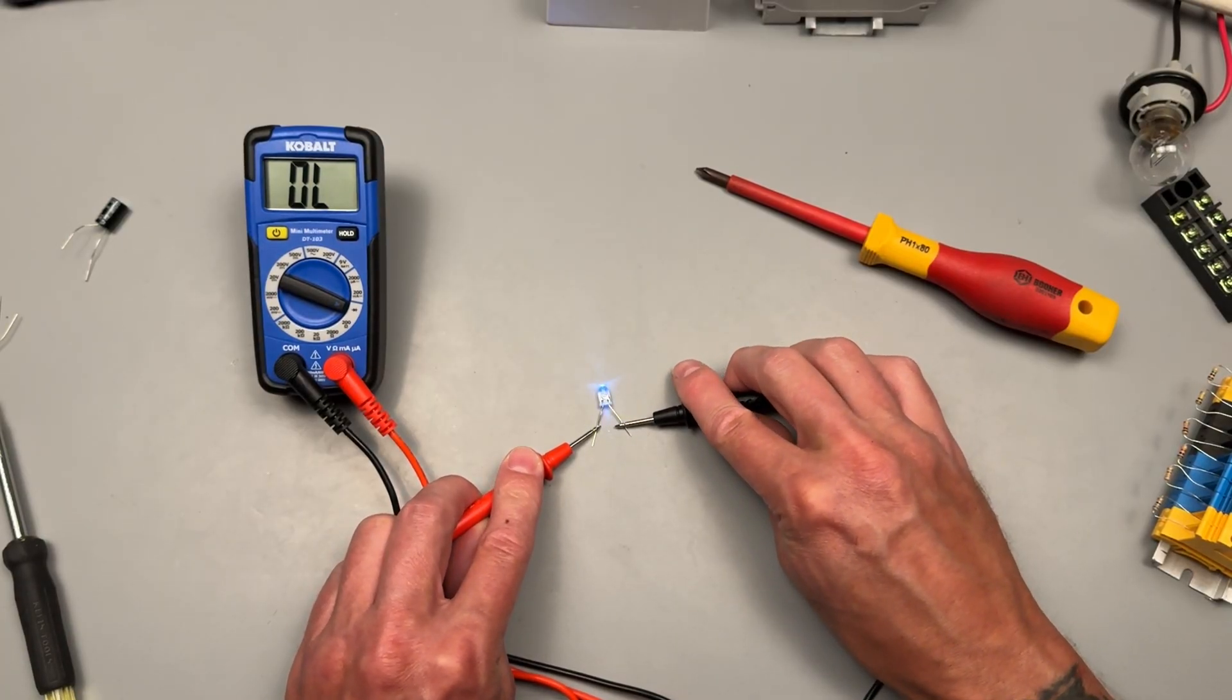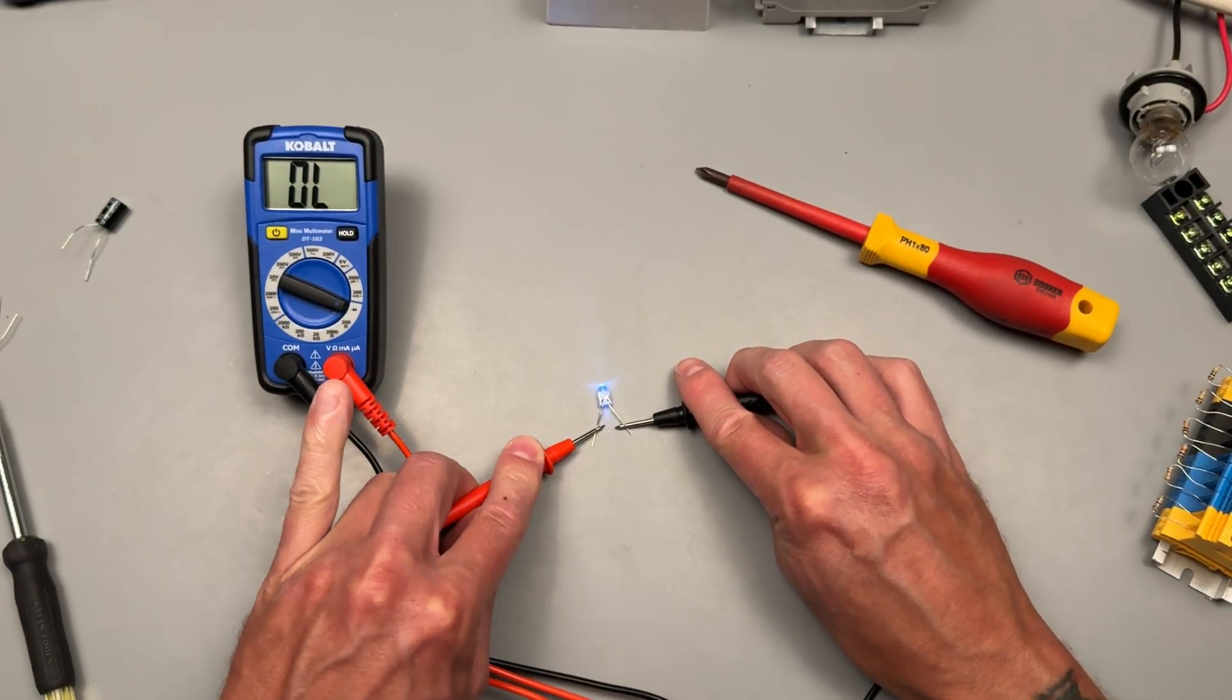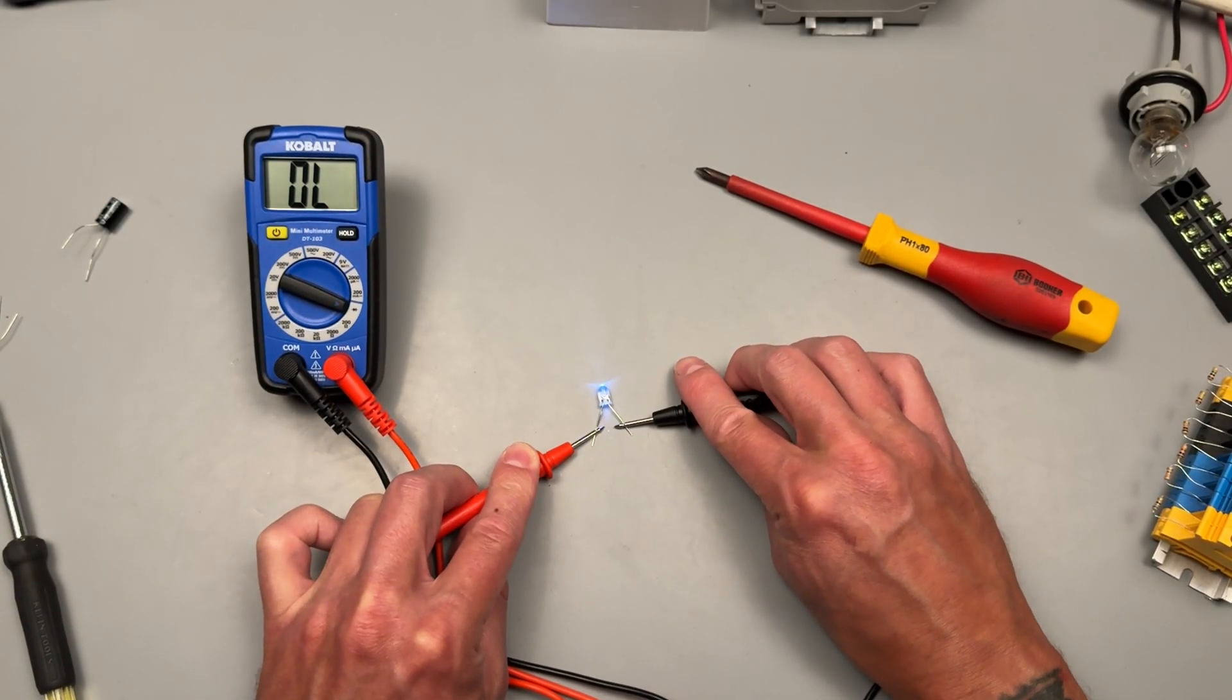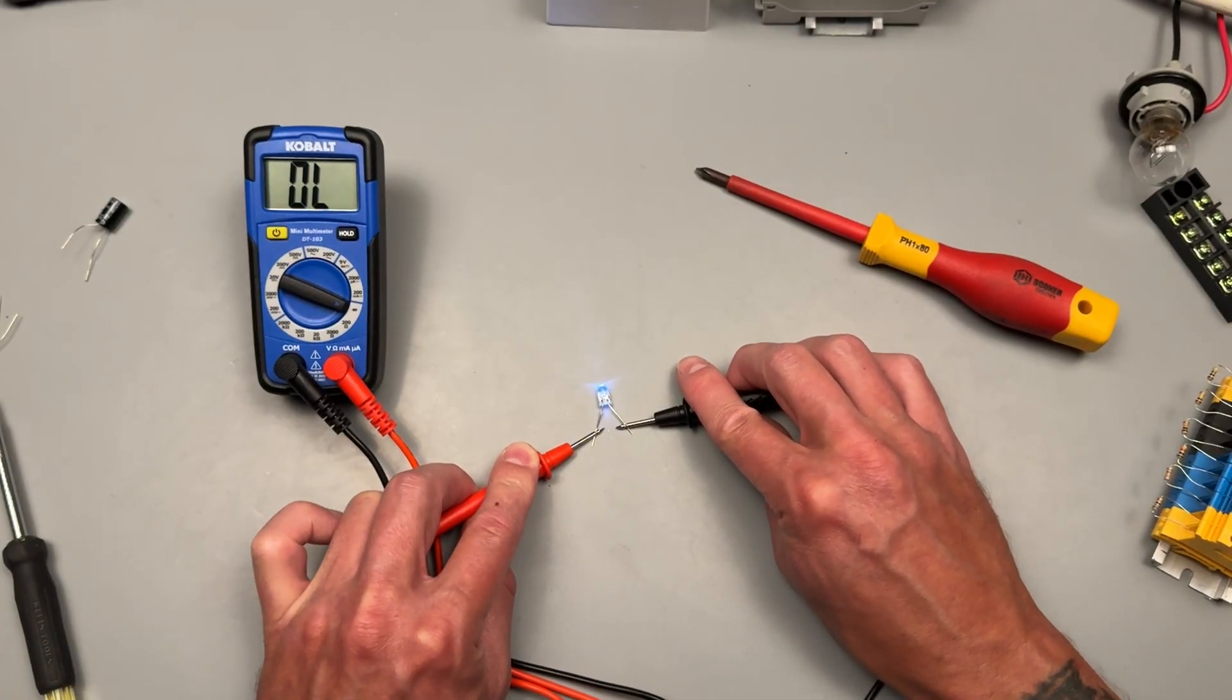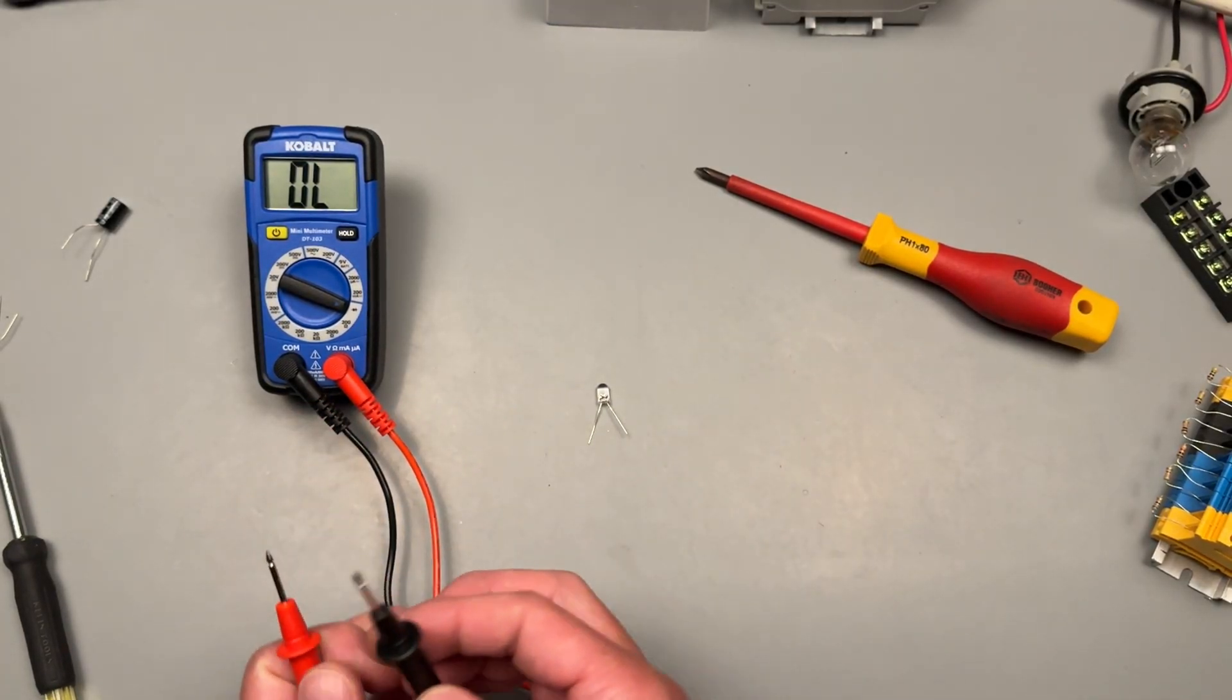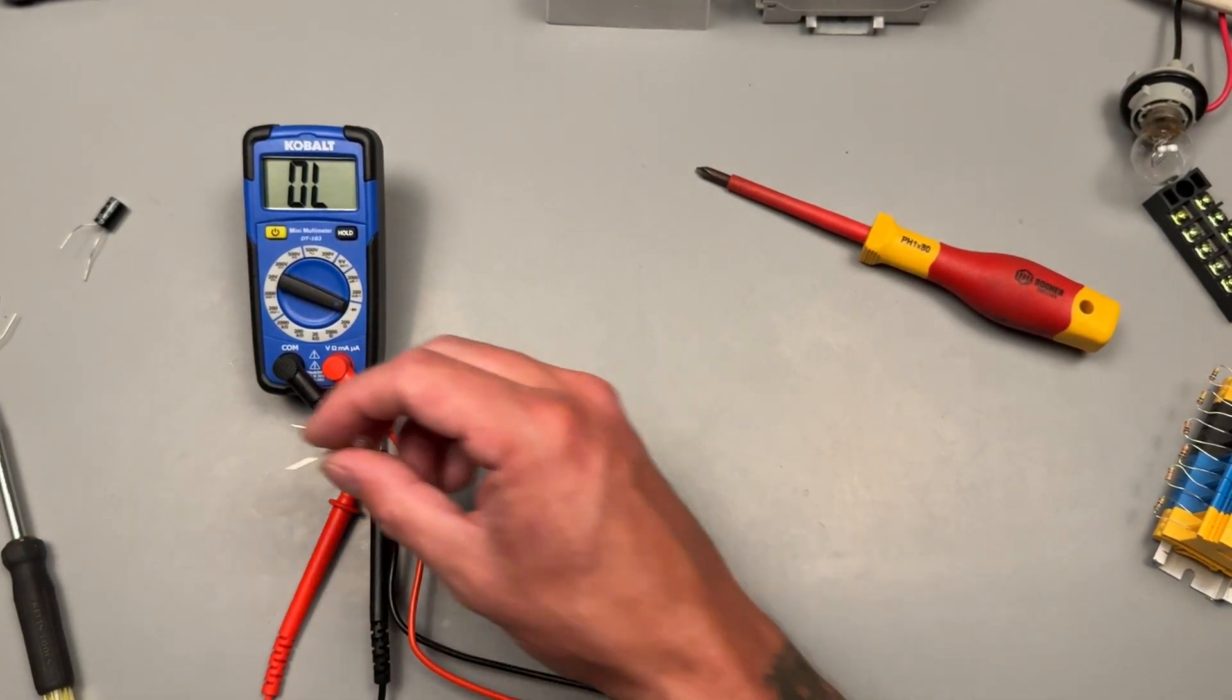And something I always like to do is see if it can light a white LED. I doubt it will be able to. Oh, it can. It doesn't show us the forward voltage, but it's able to output enough voltage from the meter to light the LED, which is cool. I like that.